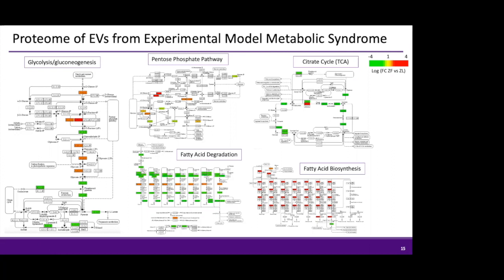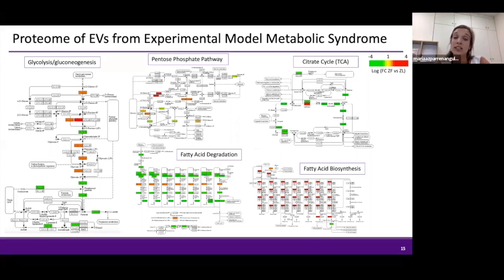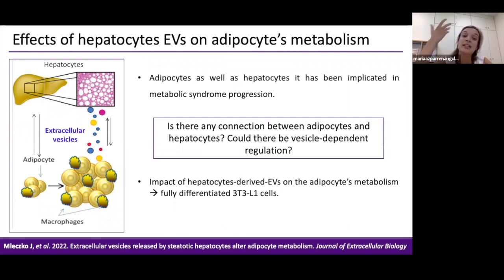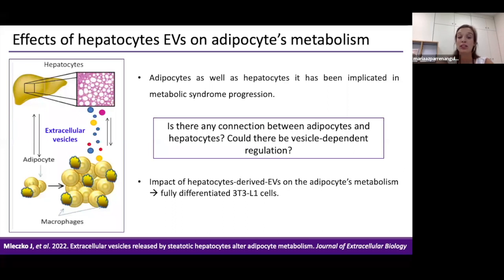The proteins shown in green are upregulated in obese extracellular vesicles compared to lean, and those in red are downregulated. Knowing that fatty extracellular vesicles have increased protein abundance, differences in protein cargo, and differences in particle size distribution, we suggested that these vesicles could have a potentially distinct physiological effect in recipient cells. Our next step was therefore to study the effect of these vesicles in a recipient cell.